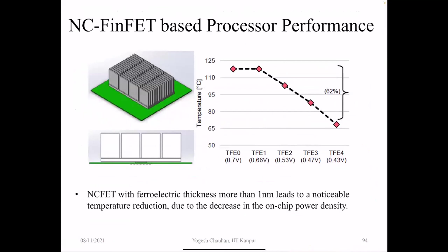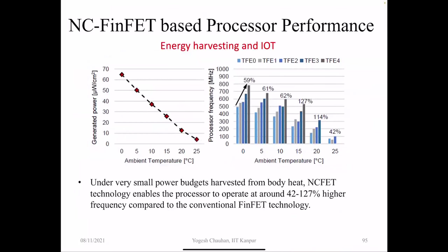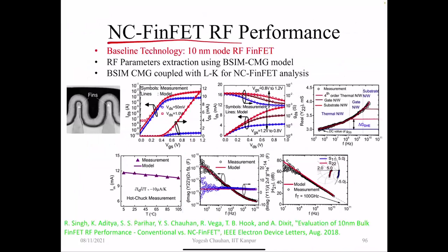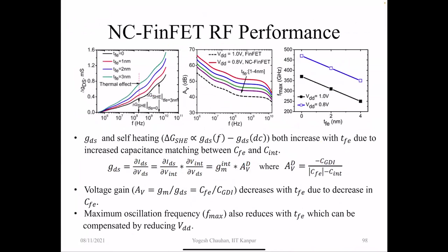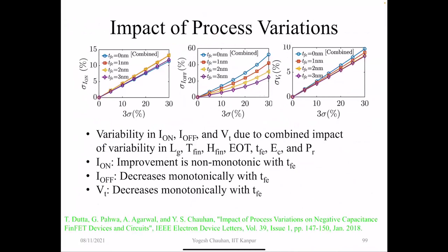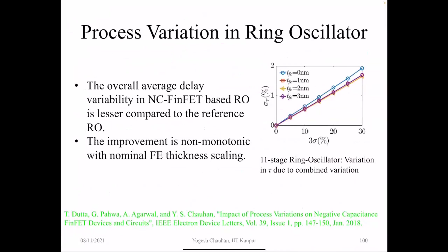We also worked on high frequency performance, getting improvement in RF performance. We analyzed process variations including variability in ferroelectric parameters, and found non-monotonic trend in I_on improvement, while I_off decreased monotonically and VT also decreased monotonically. Recently, very interesting work on variability analysis in multi-granular ferroelectric grains — grains are always present in ferroelectric. We developed a model in MATLAB for grain distribution following a gamma distribution and coupled it with TCAD simulation.